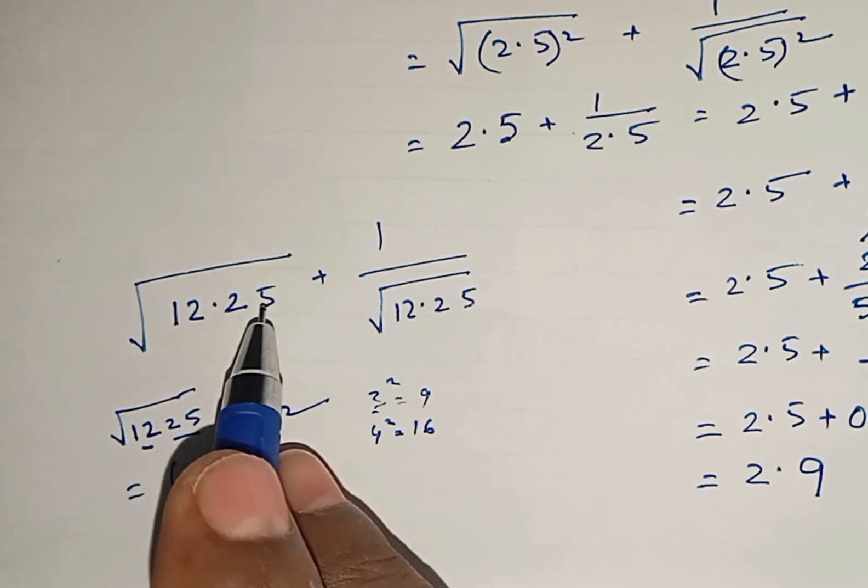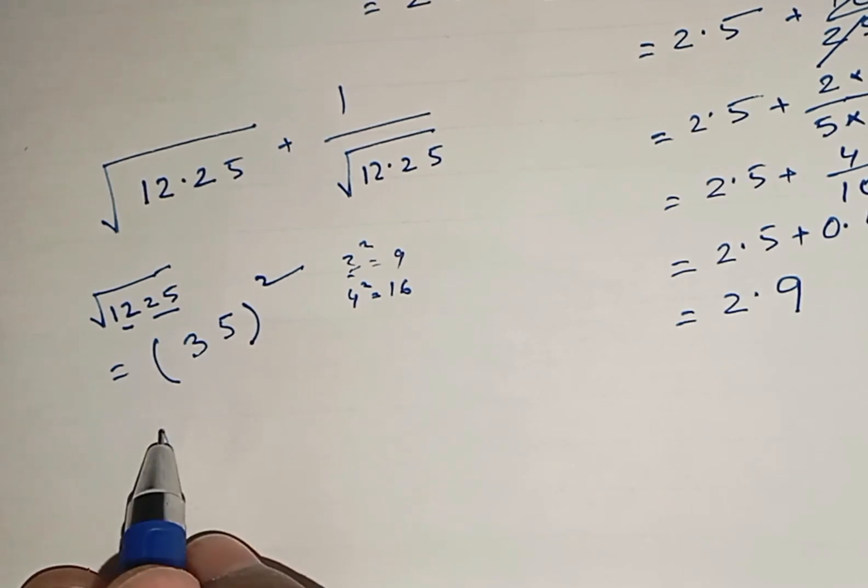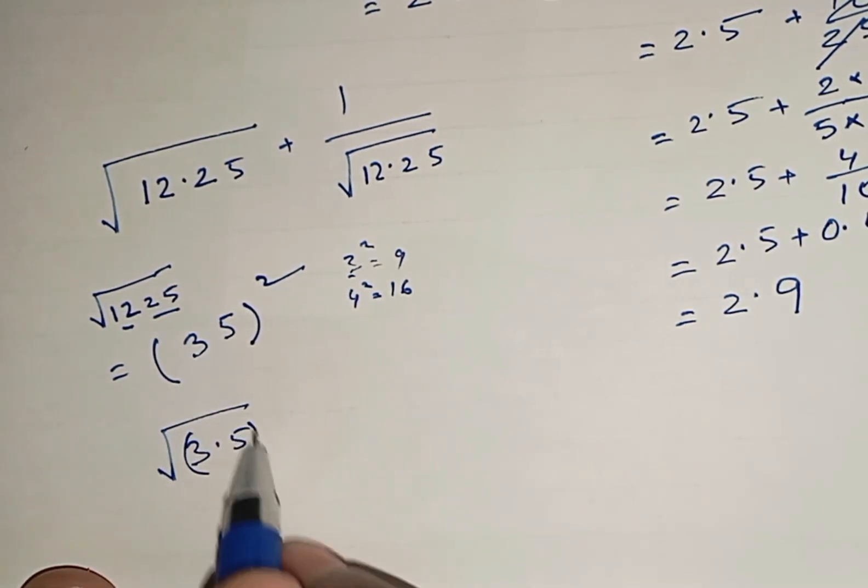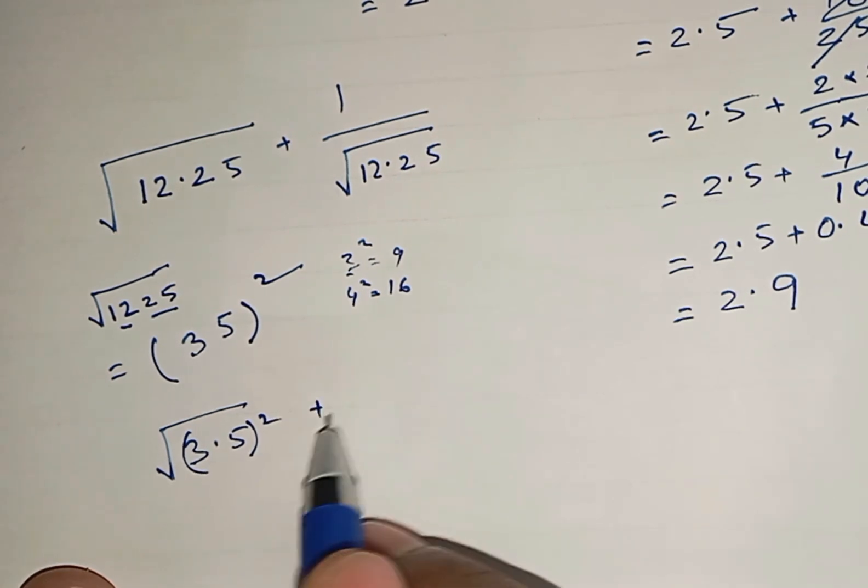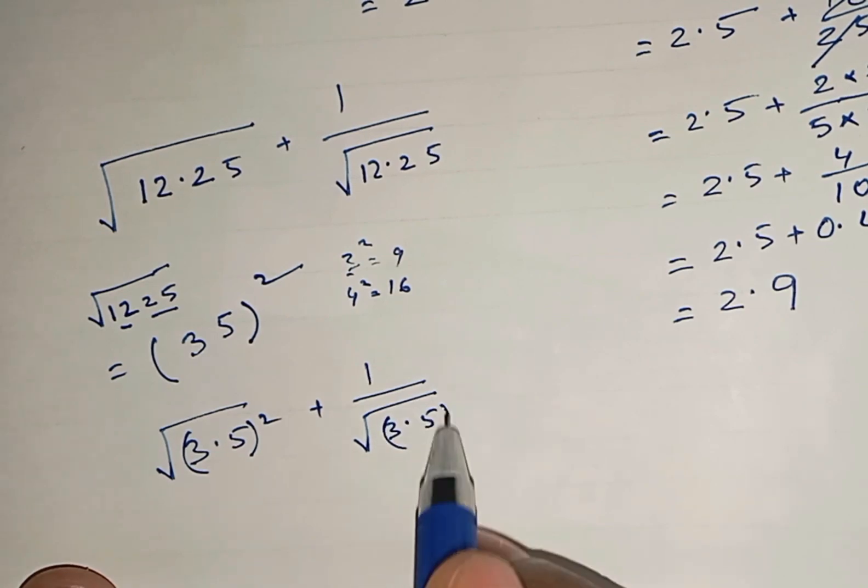As here it is 12.25, so what will it be? It will be root of 3.5 whole square plus 1 by root of 3.5 whole square.